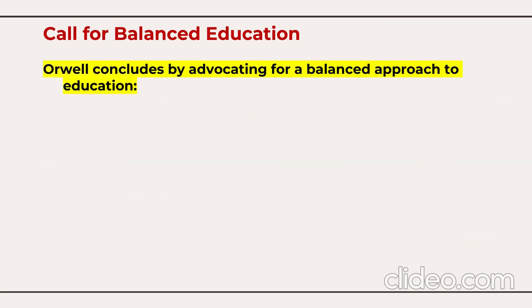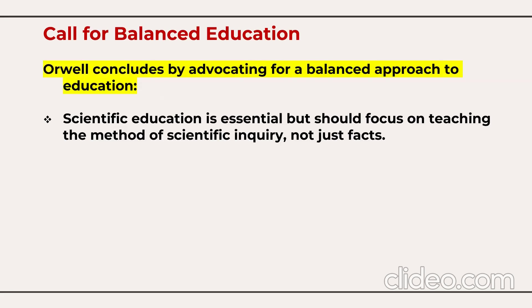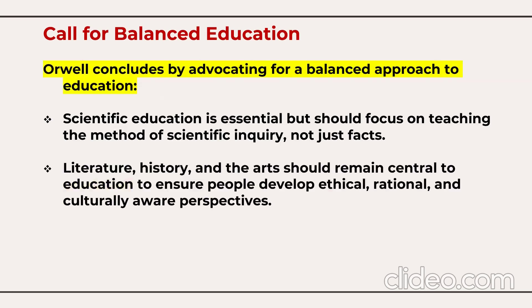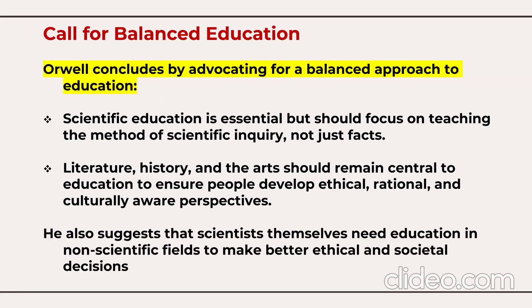George Orwell concludes by advocating for a balanced approach to education. He suggests that scientists themselves need education in non-scientific fields to make better ethical and societal decisions. This is how he brings forward a balanced approach to scientific education overall.